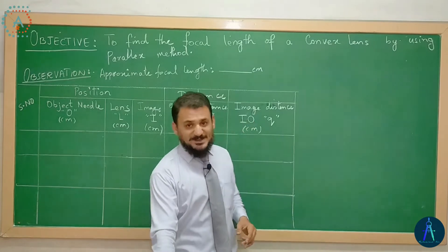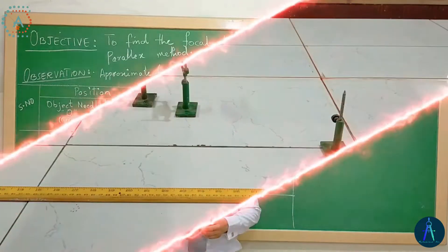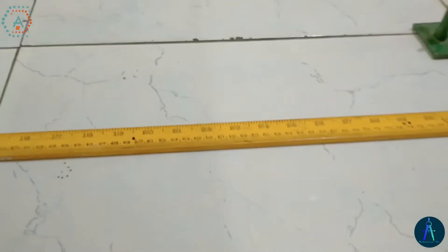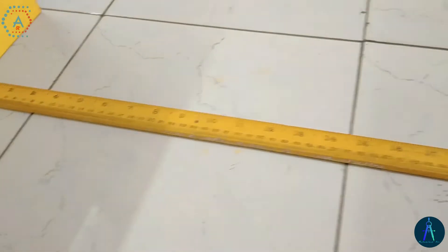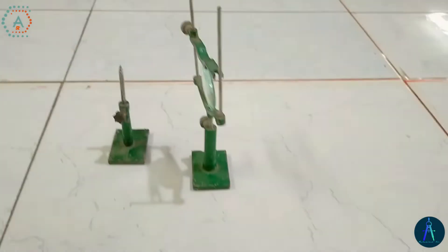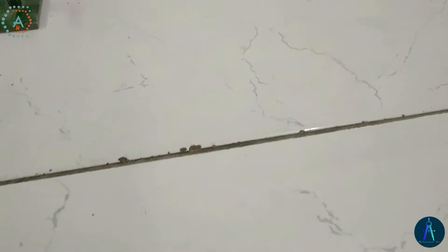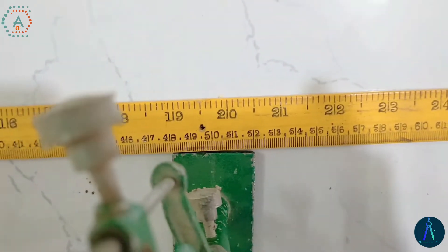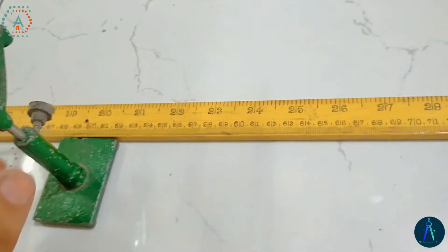Okay, let's come to the performance of this experiment. ہم نے یہاں horizontal table کے اوپر اپنے scale کو horizontally fix کر دیا ہے۔ Then ہم اپنا lens لے لیتے ہیں اور lens کو میں نے یہاں 50 cm کے mark کے اوپر place کر دیا ہے۔ Lens کی position ہم نے 50 cm mark کے اوپر رکھی ہے۔